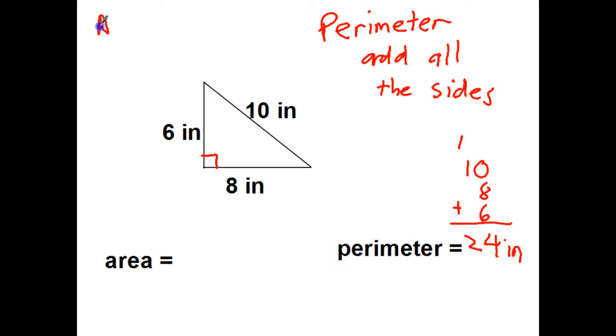Area is a little bit trickier. Area equals one-half times the base times the height. So here's my numbers that I need to use. The base is the bottom. That's what it's sitting on. The height is how tall it is.